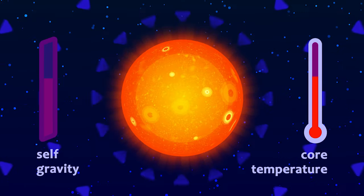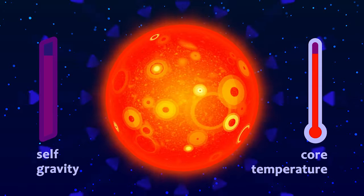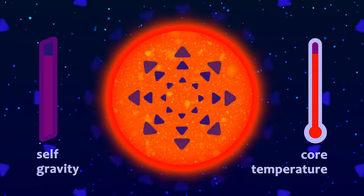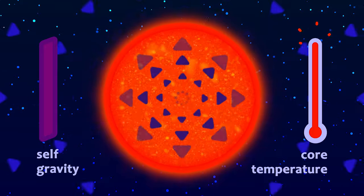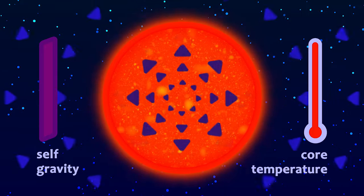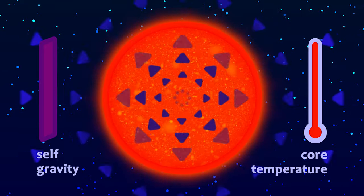More massive stars have larger self-gravity, which can be counteracted only if the core temperature is high enough. For a sufficiently massive star, the core temperature would be so high that a very interesting phenomenon would occur.